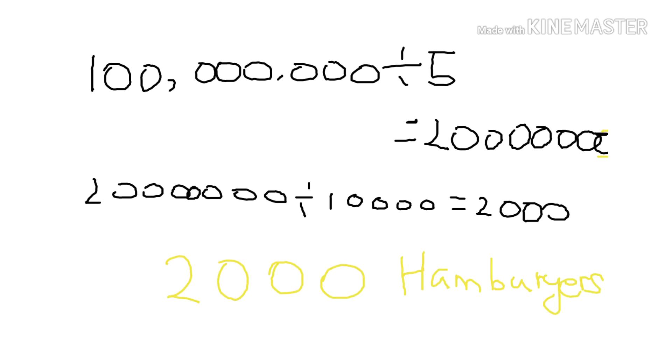We have $100,000,000 to share and $5 for one hamburger. $100,000,000 divided by $5 is $20,000. $20,000 divided by $10,000, which is homeless people, is $2,000. We can buy $2,000 for one person.